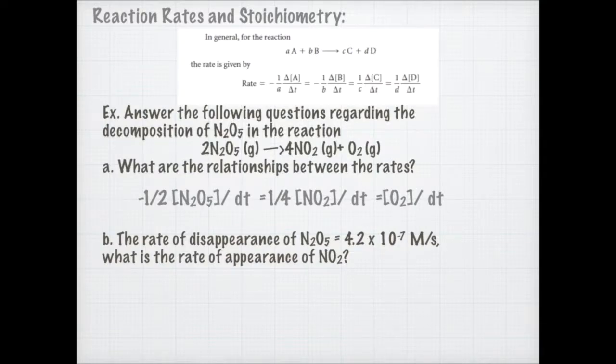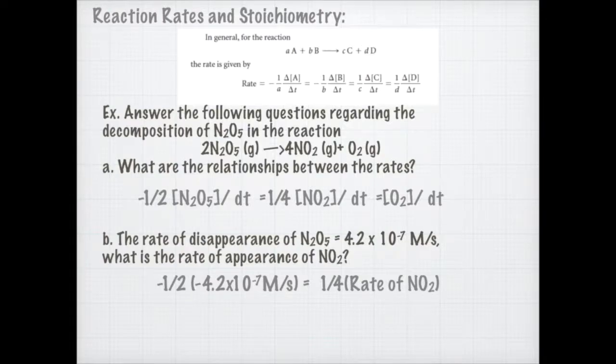Why do we care about this stoichiometric relationship for reaction rates? If I know the rate of one of them, I can actually determine stoichiometrically the rate of another. Here it tells me that my rate of disappearance of N2O5 is 4.2 times 10 to the negative seventh. I can multiply that by negative one half and set that equal to one fourth times the rate of NO2. Then I solve for the rate of NO2 by multiplying both sides by four, and I get 8.4 times 10 to the negative seventh.